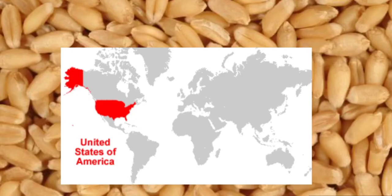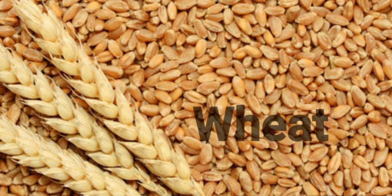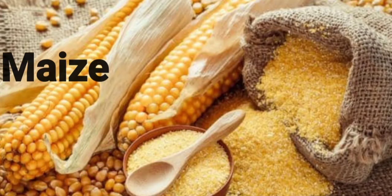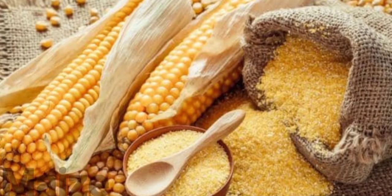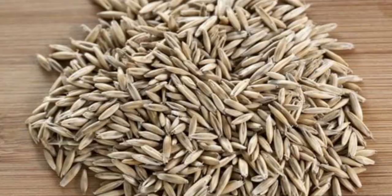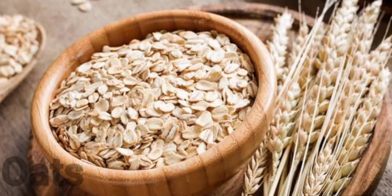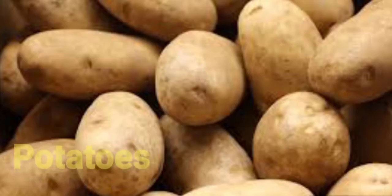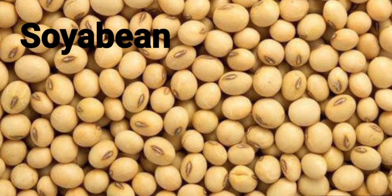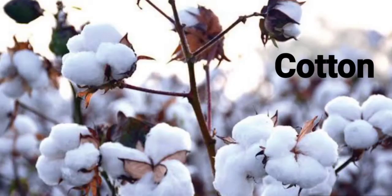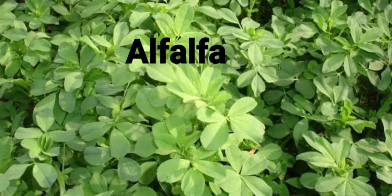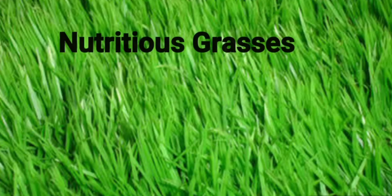This makes the United States of America the largest exporter of wheat in the world. Apart from wheat, other main crops grown here include maize, barley, rye, oats, potatoes, soya bean, cotton, alfalfa, and nutritious grasses.